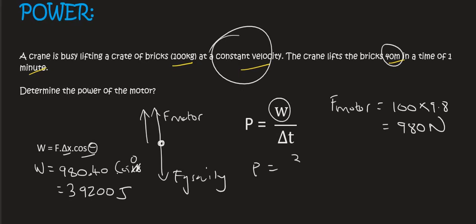So then we can say power is equal to 39,200 divided by the time. But now time must be in seconds. And so if you do that, you end up with 653.33. Now power is measured in watts. I'm not asking you what it's measured, I'm telling you it's measured in watts. So that's just a silly little joke. It always catches my students. So power is measured in watts.